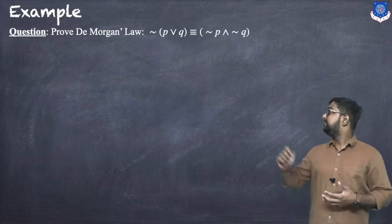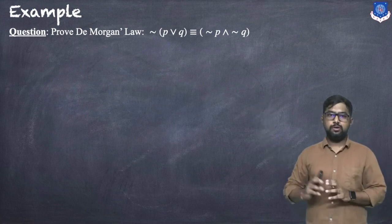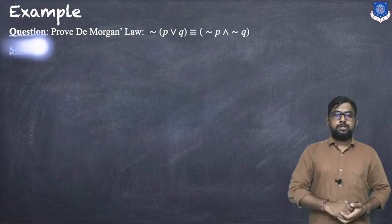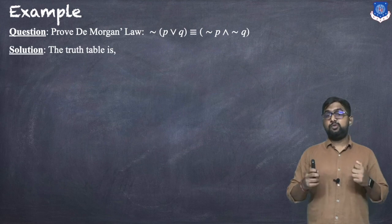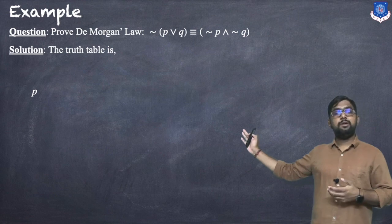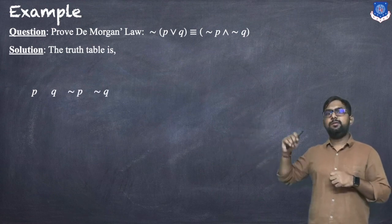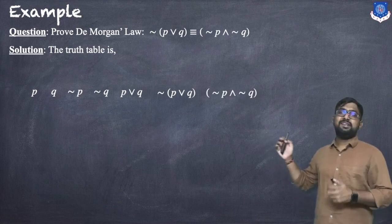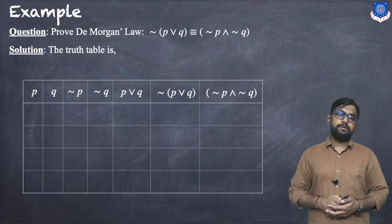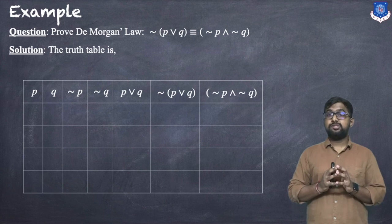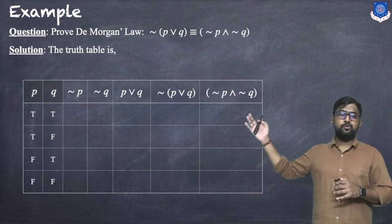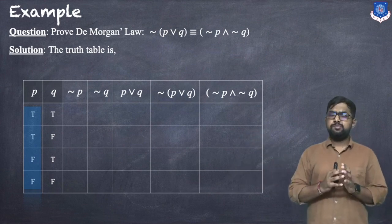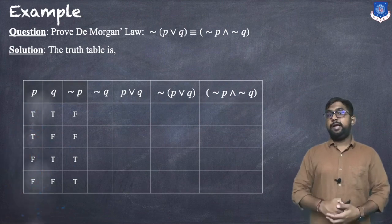Now let us prove De Morgan's law: ¬(p∨q) ≡ ¬p∧¬q. For logical equivalence, the truth values must be the same for both statements. The truth table will have columns for p, q, ¬p, ¬q, p∨q, ¬(p∨q), and ¬p∧¬q. With two statements we have four possibilities: TT, TF, FT, FF.